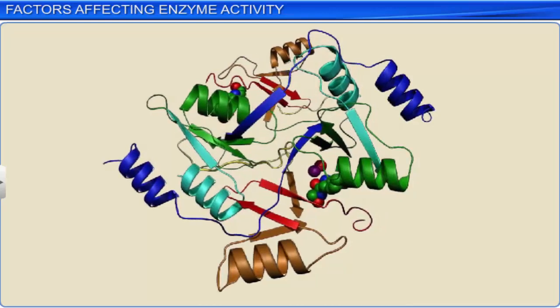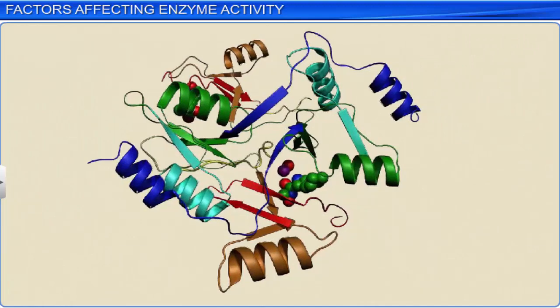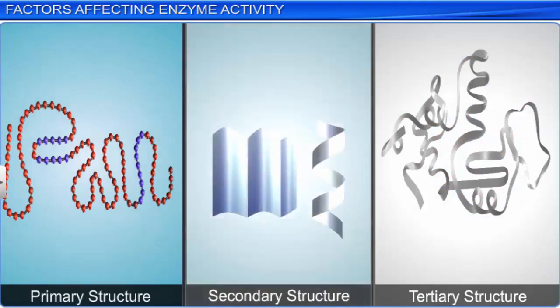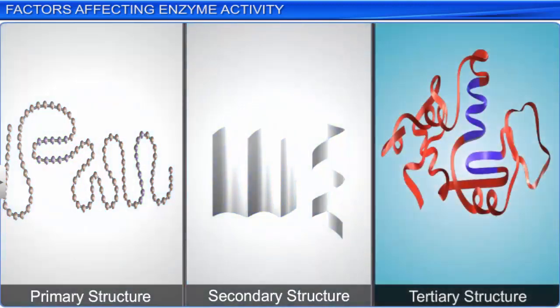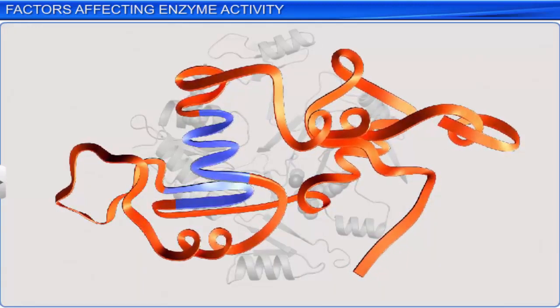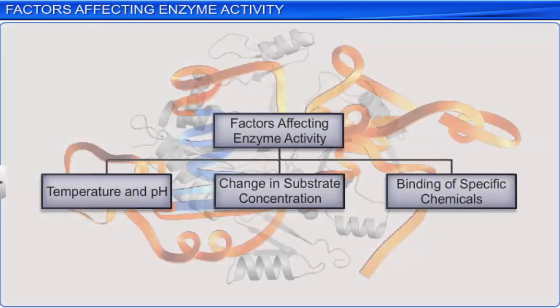Enzymes are mostly proteins, and they increase the rate of chemical reactions. Just like proteins, enzymes also have a primary, secondary, and tertiary structure. A change in a few factors can affect the activity of enzymes and can alter the tertiary structure of the protein. These factors include temperature, pH, change in substrate concentration, or the binding of specific chemicals that regulate the activity of enzymes. Let's take a look at each of these factors.